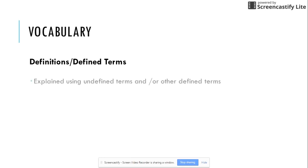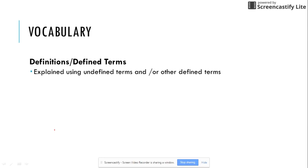Definitions and defined terms. These are explained using undefined terms and or other defined terms. So for example, a space is defined as a boundless three dimensional set of all points and it can contain lines and planes. That concludes the first set of notes for chapter one, section one. Please make sure that you bring any questions that you have to class and be prepared to complete assignments with your table partners.